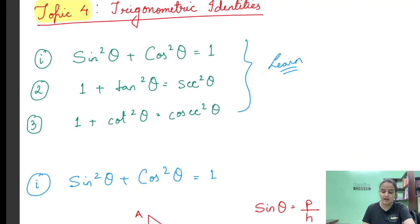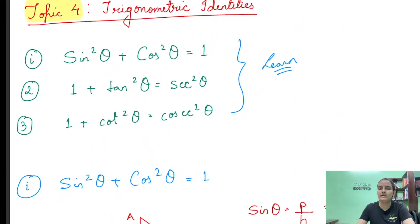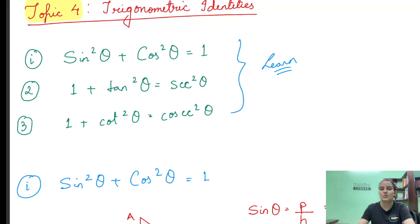इस type के questions both CBSE board और ICSE board के Class 10 के exam में आती हैं, and this is very very important — almost 3 to 4 marks का question इससे पक्का आता है। तो in the next video, we will try to solve a few questions related to applying these trigonometric identities. I hope यह video आपको समझ में आया और पसंद आया। So learn the identities, know the identities, and I will see you in the next video. Bye-bye!